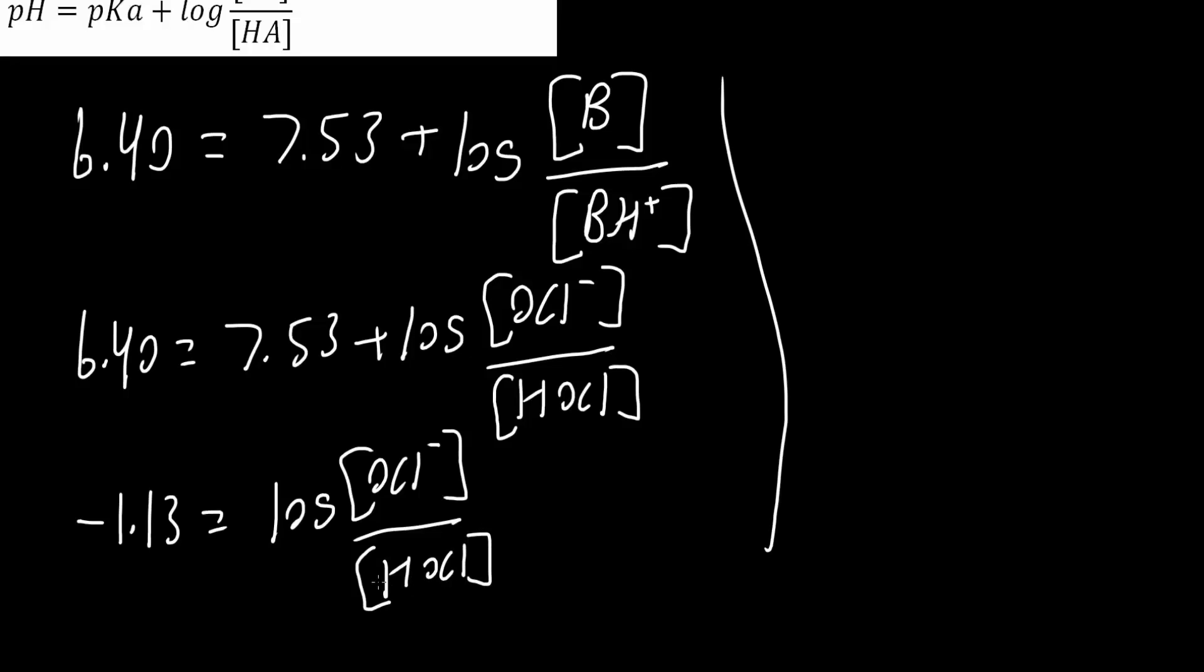Okay, so we want to remove the log. We can do that if we go 10 here, 10 here, because log is based out of 10. So this would give us 1, and then we can say that OCl minus divided by HOCl,